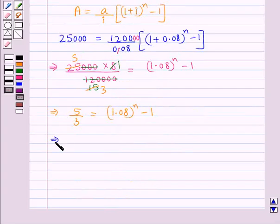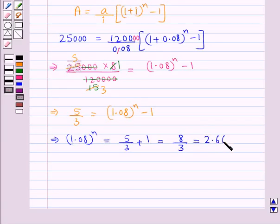And from here we have 1.08 to the power of N is equal to 5 upon 3 plus 1 which is equal to 8 upon 3. And this is equal to 2.666. So we now have 1.08 to the power of N is equal to 2.666.